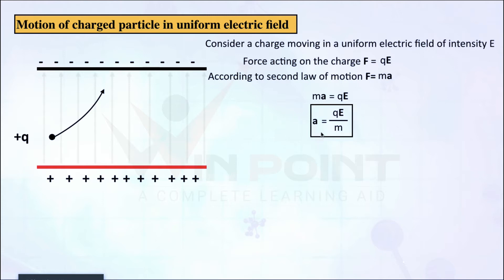This acceleration is constant because Q is a constant — we are not changing the charge. E, the electric field intensity, is also a constant since it is a uniform electric field. The mass of the charge is also constant. So this acceleration is constant.